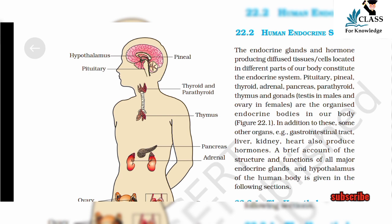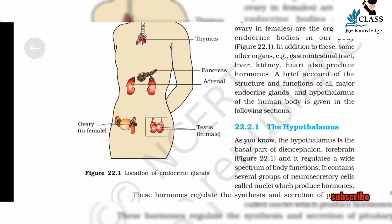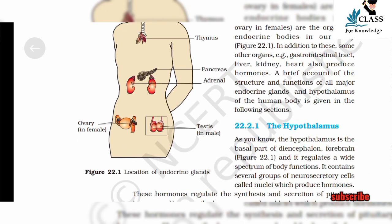22.2 Human Endocrine System. The endocrine glands and hormone-producing diffuse tissue cells located in different parts of our body constitute the endocrine system. These include the pituitary, thyroid, adrenal, pancreas, parathyroid, thymus, and gonads — testes in males and ovary in females — as the organized endocrine bodies. In addition, other organs such as the gastrointestinal tract, liver, kidney, and heart also produce hormones. A brief account of the structure and function of all major endocrine glands and the hypothalamus is given in the following section.